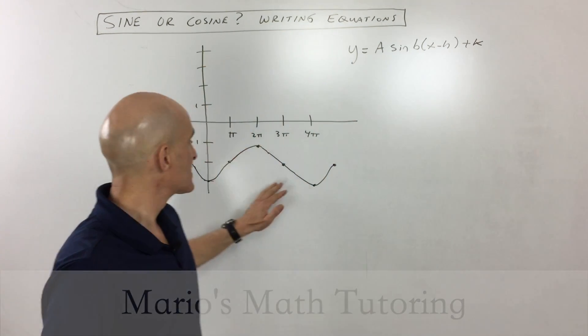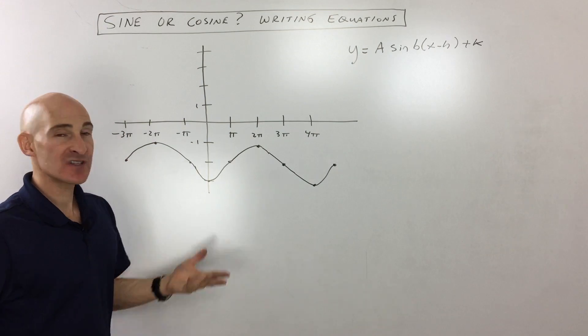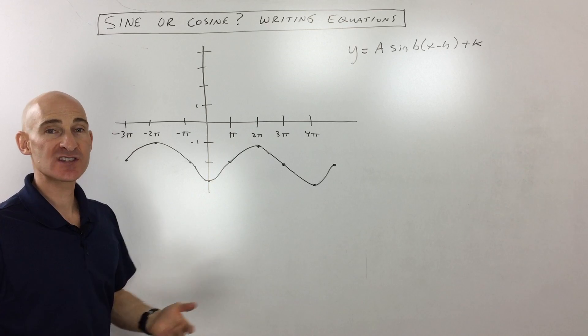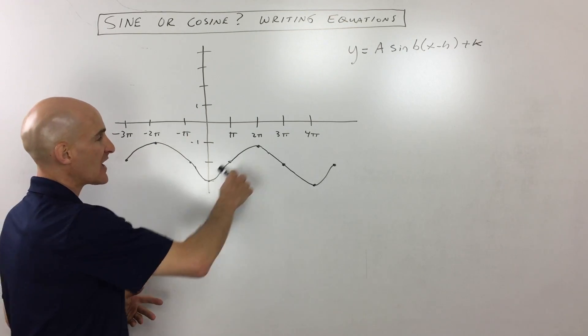So let's talk about some examples here. This first example, you can see they give us a sinusoidal graph. What's a sinusoidal graph? Well, it's basically this S-shaped graph.